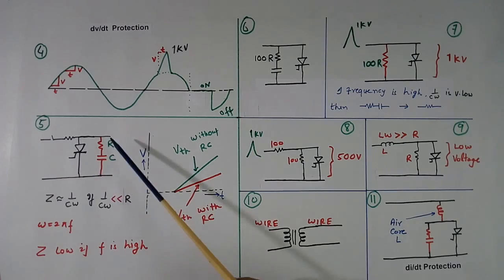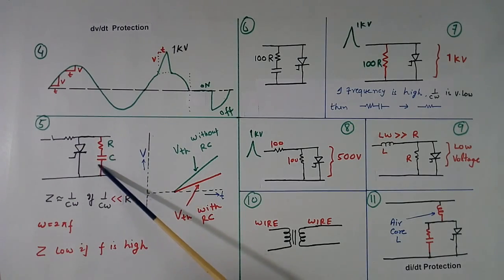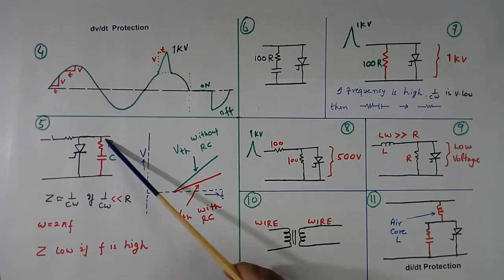Now we will see how snubber circuit helps. Generally impedance of this C at 50 Hz, at line frequency is higher than this. But when the high frequency component comes, at higher frequency, this impedance is 1 by C omega. When omega is more, this will reduce. If F is high, Z is low. And this value becomes even lower than this.